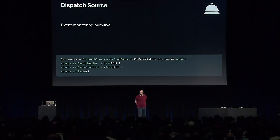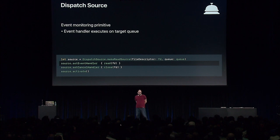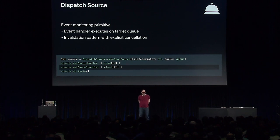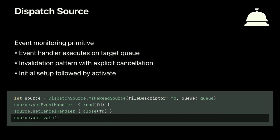The next concept is the dispatch source — our event monitoring primitive in GCD. We set one up to monitor a file descriptor for readability with the make read source constructor, passing in a queue as the target queue where we execute the event handler. This target queue is also where you might put other work that should be serialized with this operation. We then set the cancel handler for the source, which implements the invalidation pattern, and call source.activate to start monitoring. Sources are an instance of a more general pattern throughout the OS where objects deliver events to you on a target queue you specify.